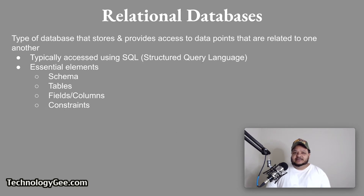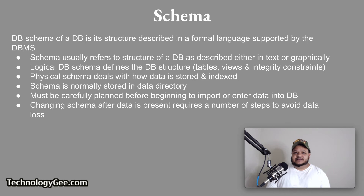A relational database is a type of database that stores and provides access to data points that are related to one another. Relational databases are typically accessed using SQL, or structured query language. The essential elements of a relational database include the schema, tables, fields or columns, and the constraints. The database schema is its structure described in a formal language supported by the database management system, or DBMS.